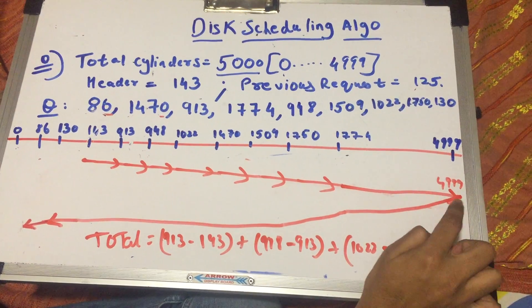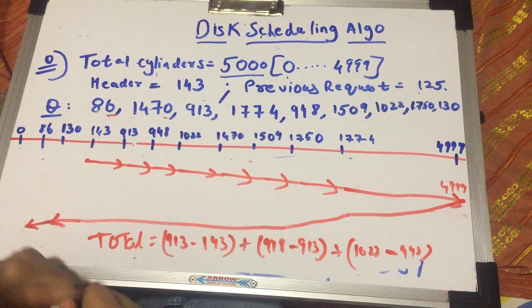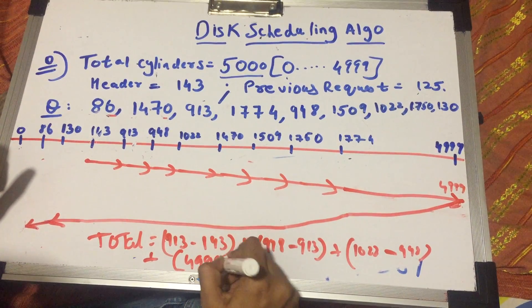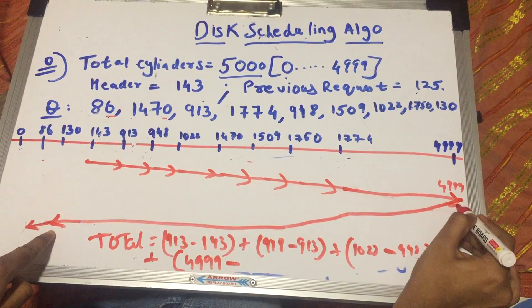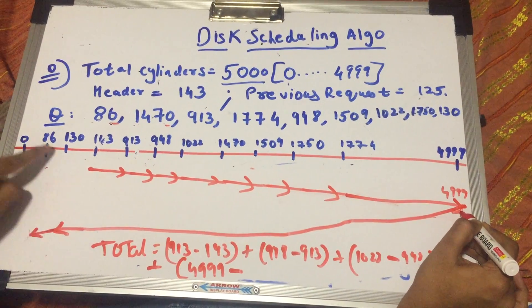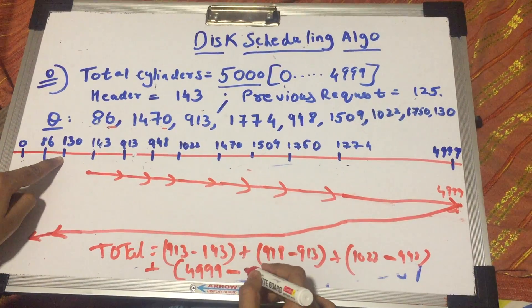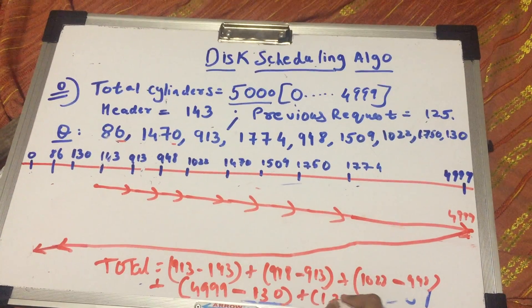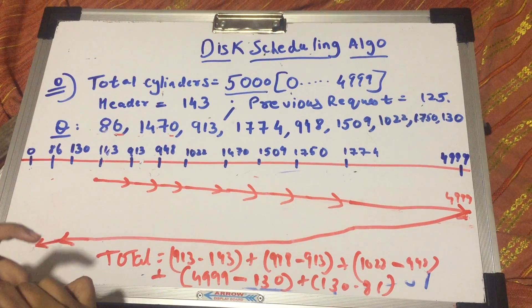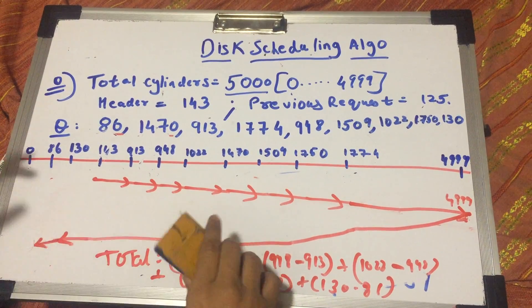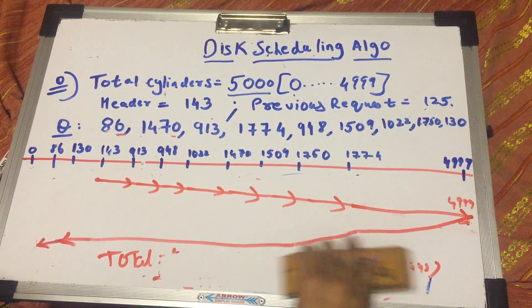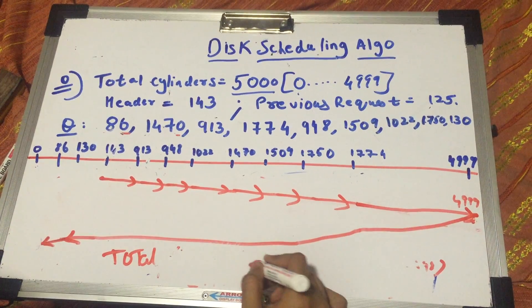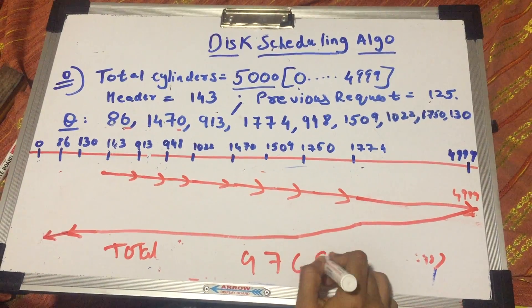Well, you have to include this in your total seek time. So you also do plus 4999 minus whatever this distance was between 4999 and 130. So, 4999 minus 130 and then 130 minus 86. When you do the math for yourself, you will find that this amounts to 9769.